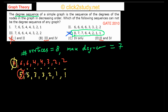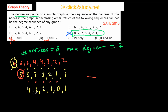We remove the next highest vertex with degree 5, which affects the next 5 terms. After subtracting 1 from each: we get 4, 2, 2, 1, 0, 1. However, the sequence must be in decreasing order, but the 0 appears before the 1, so we need to rearrange these terms back into decreasing order.